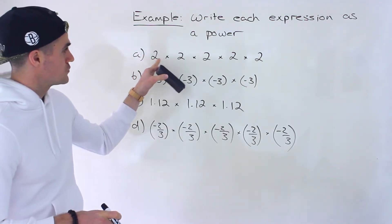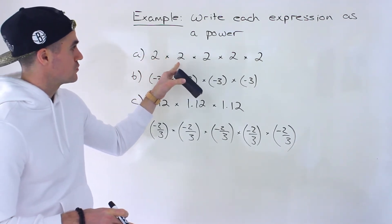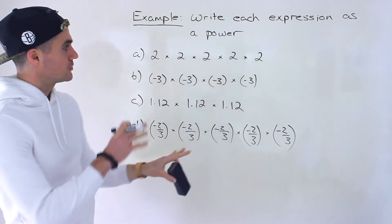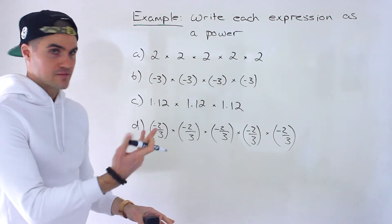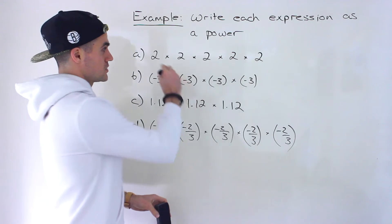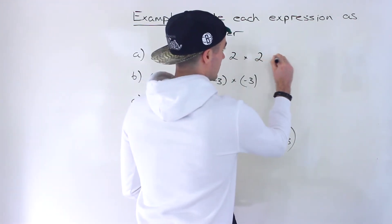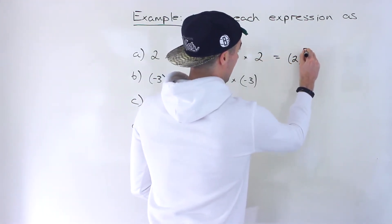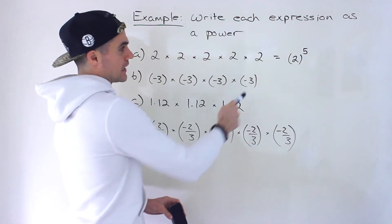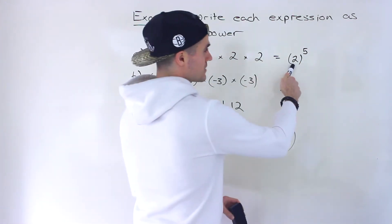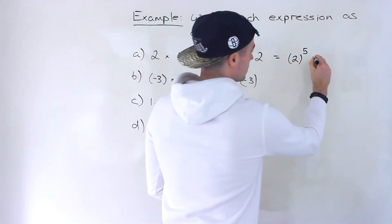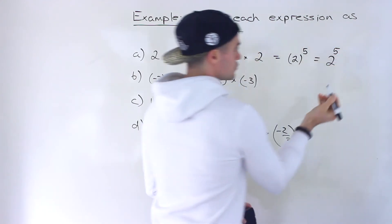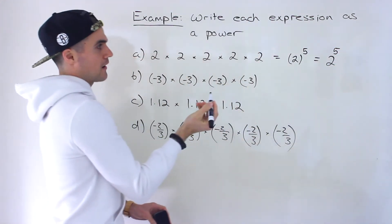So notice that in part A we have 2 times 2 times 2 times 2 times 2. We're multiplying 2 five times, so we can rewrite this as 2 to the power of 5. Because this is positive, the brackets aren't super necessary, so you can also write 2 to the power of 5.